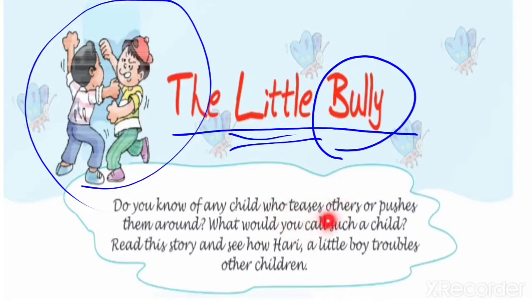'Teases' means any child who laughs at others — either in a friendly way or in order to upset them. A person may laugh to hurt another person in a teasing way, or to make that person happy. Here, 'teases' means somebody wants to hurt or upset someone. 'Pushes around' — you know these things happen at school while going in a line, when you complain to the teacher that someone is pushing you. What would you call such a child?